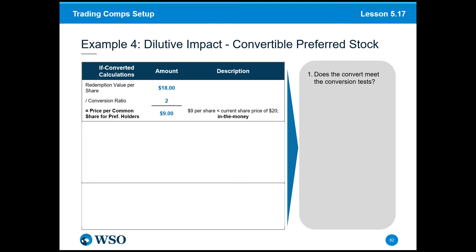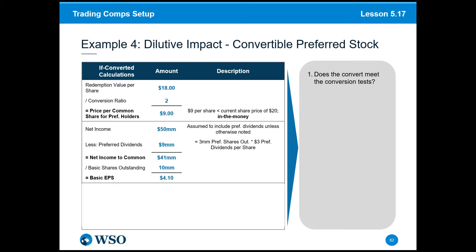The next step is to figure out whether this is dilutive or anti-dilutive. First, let's figure out what basic EPS is, then look at diluted EPS and see the differential. For basic EPS, our net income is $50 million, but we want to get to net income available to common equity holders. We subtract out preferred dividends of $9 million — that's 3 million preferred shares times $3 in dividends per share. Subtracting $9 million from $50 million gives net income to common equity holders of $41 million, divided by 10 million basic shares outstanding, so basic EPS is $4.10.